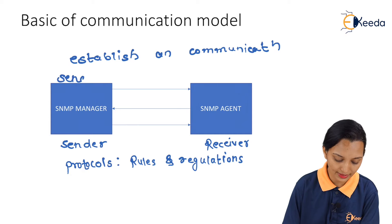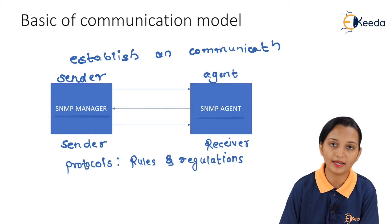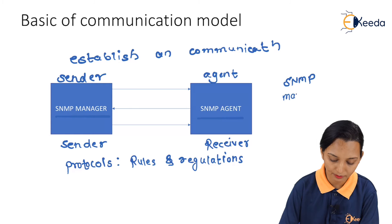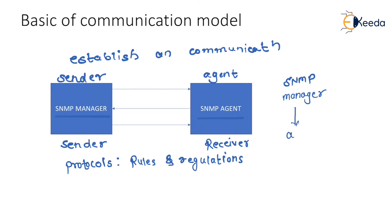The sender inside SNMP is known as the SNMP manager, and the receiver inside SNMP is known as the SNMP agent. Because in the process of SNMP communication, the manager is the component who is able to create the data. The agent is the component who is able to receive the data and carry forward or pass it to all the resources.